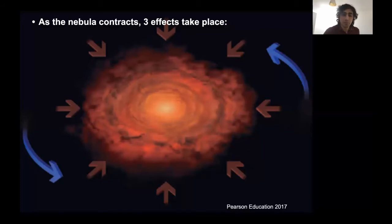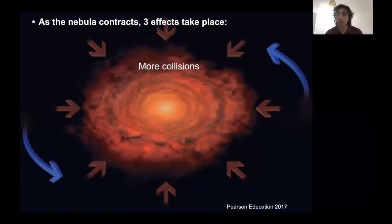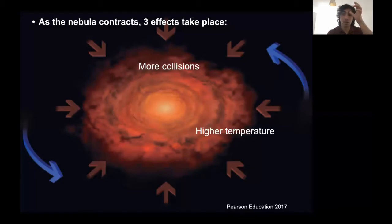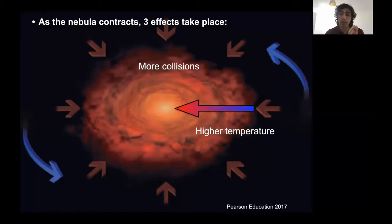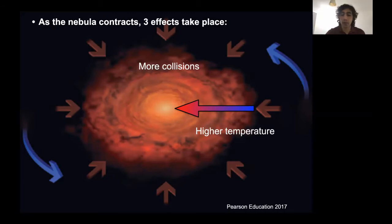As the nebula contracts, three main effects will take place. First, you're going to get more collisions — because materials are gravitating toward each other and there is less space between individual grains and pieces. As you get more collisions, you're going to get higher temperatures. The early nebula will have very high temperatures, particularly toward the center, where more mass is being concentrated and more collisions occur. So you get a temperature gradient where the center of the nebula is extremely hot, and as you move further away it becomes relatively colder. That temperature gradient is very important in explaining why we have rocky planets toward the center and gas and ice giants toward the outside.